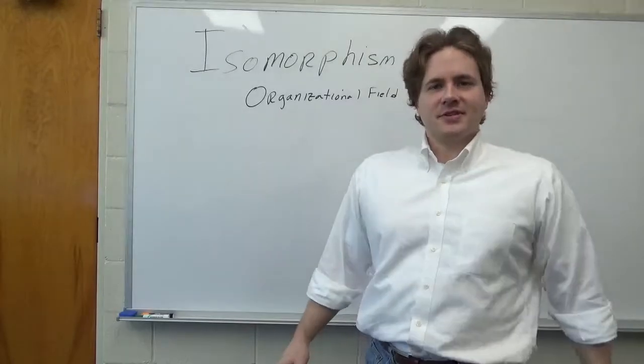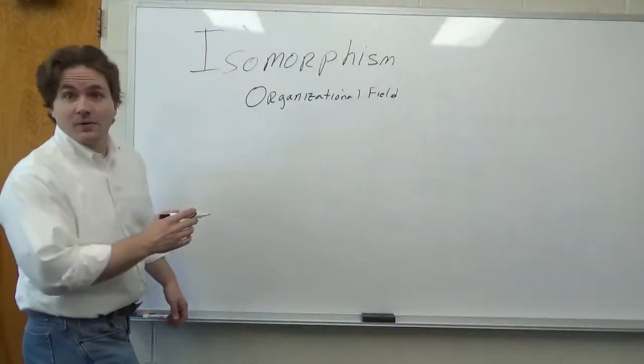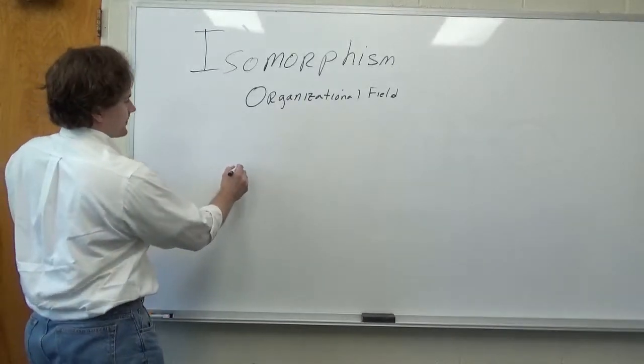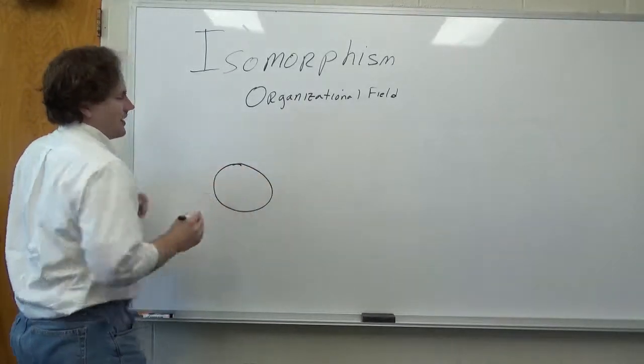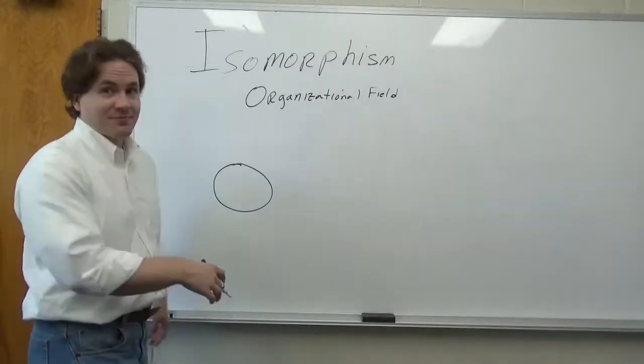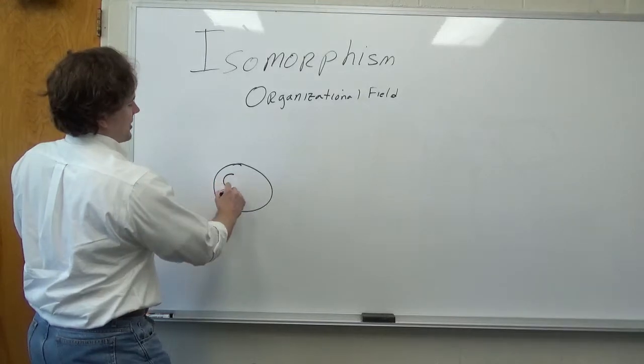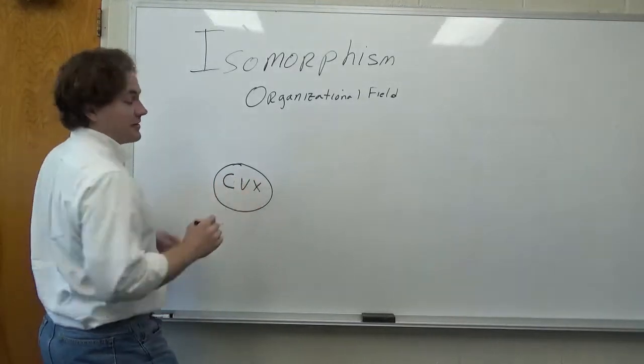Let's draw a very simple stakeholder map. I always like to use oil companies as examples because they're so big and they're so diverse and pretty much everybody knows something about oil companies. Let's take a company like Chevron, CVX I believe is their stock symbol.